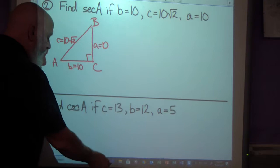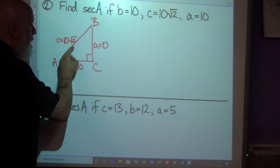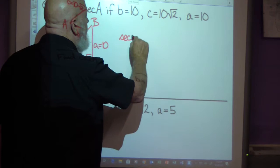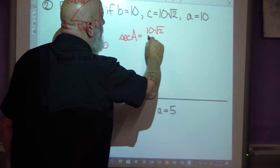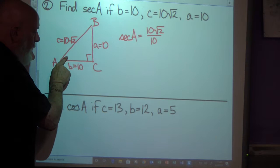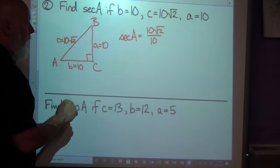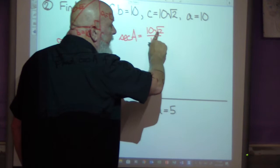I want the secant of A. Well, from the perspective of A, the secant is the hypotenuse over the adjacent. So that would be 10 radical 2 over 10. The secant is the inverse of the cosine. The cosine is adjacent over hypotenuse. So the secant is hypotenuse over adjacent. And now I'm going to simplify this. I see that these tens will cancel each other out. Since this is not a sum or a difference, these are two factors that are being multiplied.